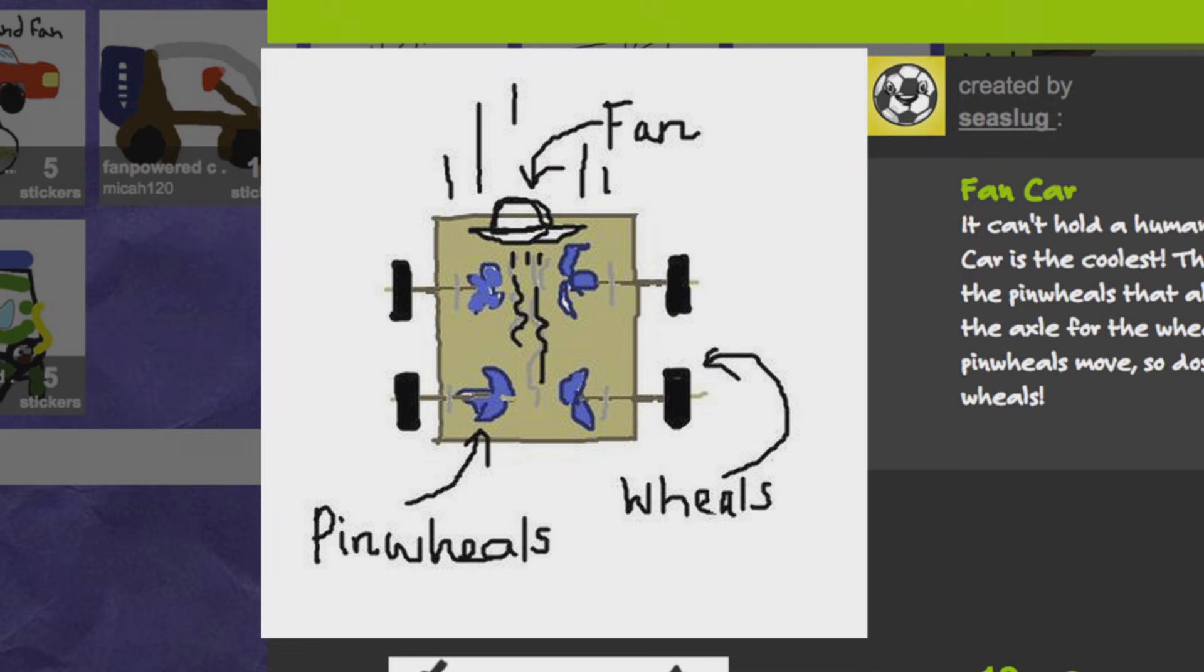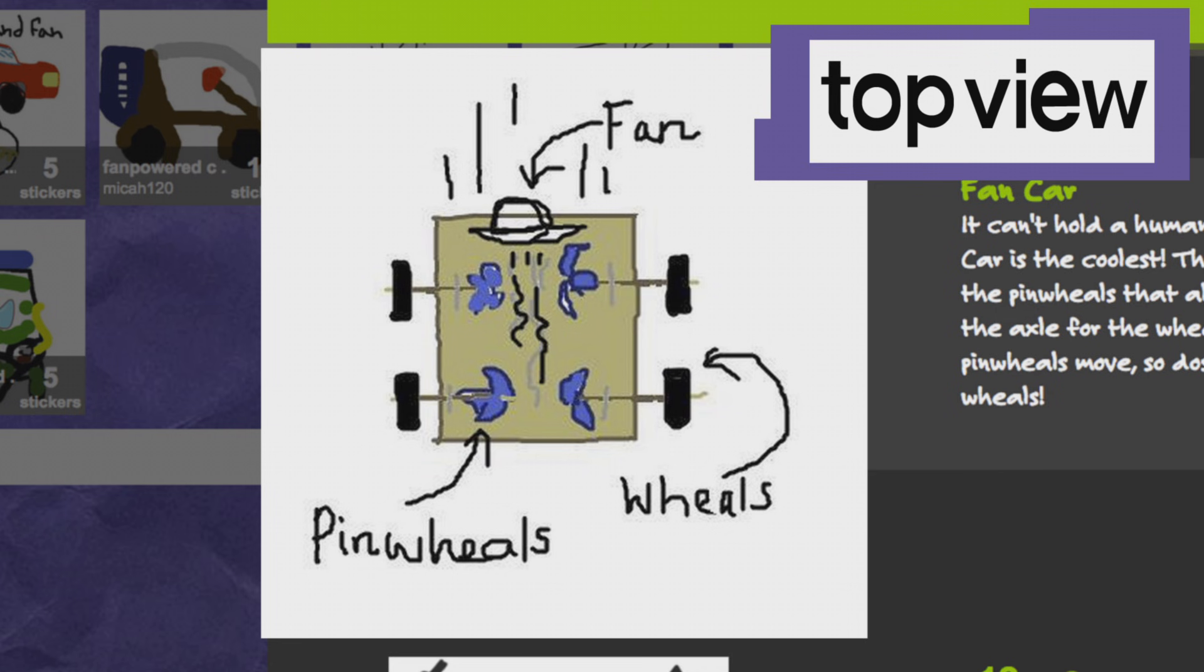This sketch of the fan car is from a top view angle. Our isometric sketch will show some of the front, side, and top of the fan car. This view is helpful. It'll appear three dimensional, sticking out of the page. It'll give you a better idea of what your design will look like before you build it in real life.